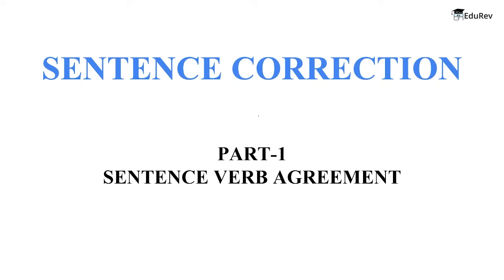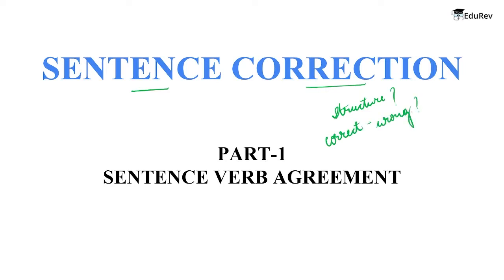Hello learners! I hope your preparations for the CAT exam are going very well. Today we will start with sentence correction. But before starting, let me ask you some questions. How much functional awareness do you have around the structure of sentences? Can you differentiate a correct sentence from a wrong one, or look at a sentence and tell what's wrong from the functional point of view?